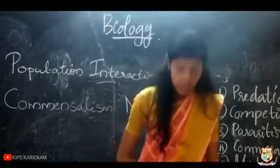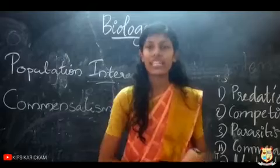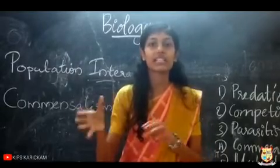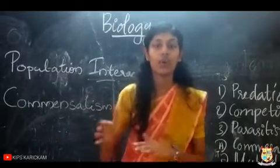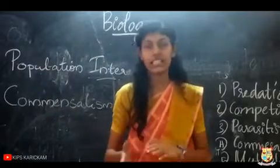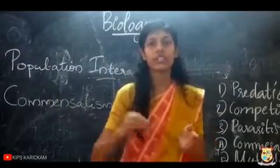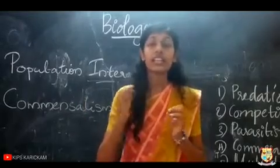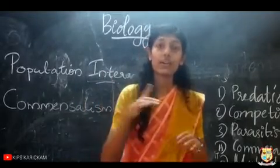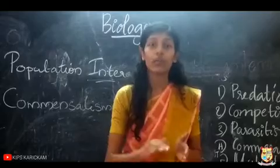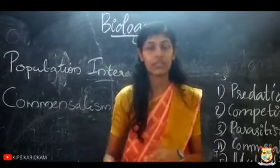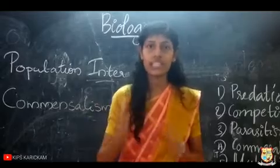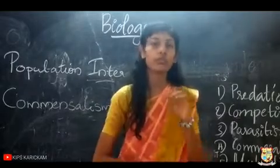For example, the interaction between a grazing cow and a crow. Some insects remain on the body of the cow, and the crow comes and eats these insects. The crow is benefited because it gets its food by eating the insects. And when the insects are on the body of the cow, they cause itchiness, so when the crow eats them, the cow is also benefited by getting rid of the itchiness.